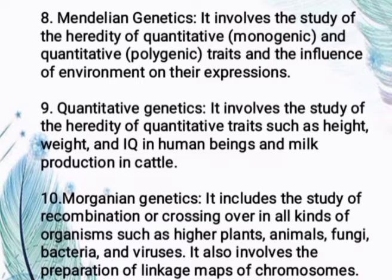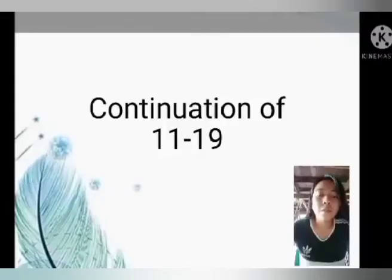Quantitative genetics involves the study of the heredity of quantitative traits such as height, weight, and IQ in human beings and milk production in cattle. Morganian genetics includes the study of recombination or crossing over in all kinds of organisms such as higher plants, animals, fungi, bacteria, and viruses. It also involves the preparation of linkage maps of chromosomes.